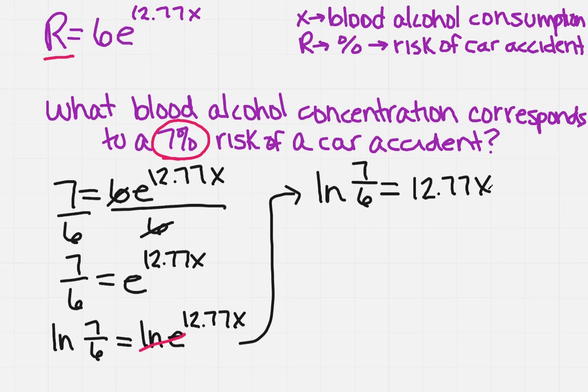So now if I want to get x all by itself I'm going to have to divide by everything in front of it, so I'm going to divide both sides by 12.77. Again when I divide anything by itself those cancel and I'm left with only x on the right hand side.